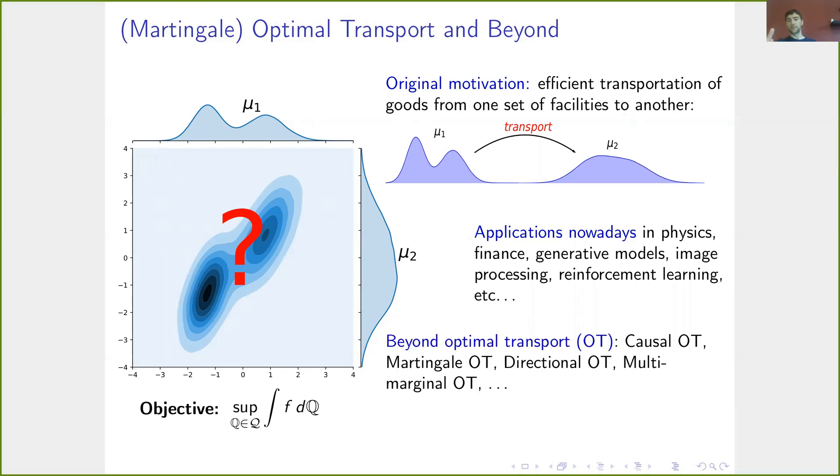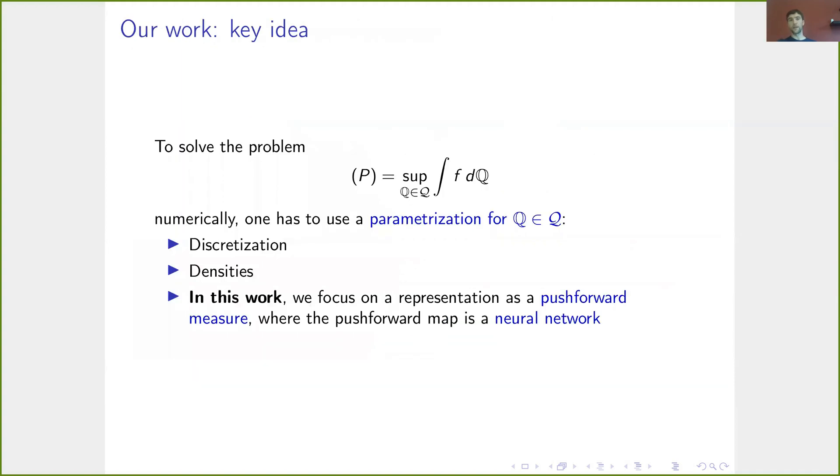In particular, as mentioned, this martingale constraint is just one particular aspect. There are many different variations of the optimal transport problem, but they all have in common that the optimization problem we wish to solve is of this form that we take the supremum over some set of measures Q of an integral f dQ. The talk is really about a numerical method to solve such an optimization problem.